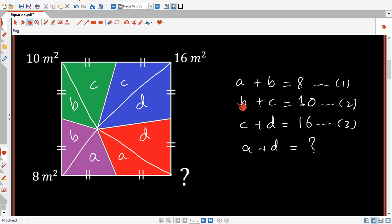So that will give us a plus b minus b minus c. That will cancel out b and we're going to be left with a minus c. If we add that to equation number 3, that will cancel out c and we're going to be left with a plus d.